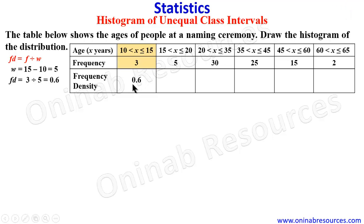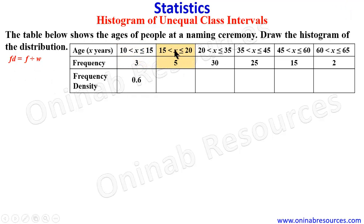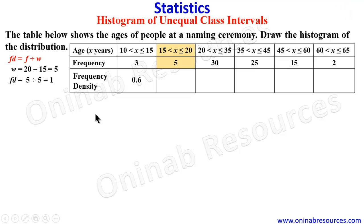Please note: the class intervals given here are connected. If you look at this, 10 to 15, 15 inclusive, then 15 to 20, 20 to 35 — they are connected. That is why to get the class width we go straight from 15 minus 10. For the second class interval, the class width is 20 minus 15, which is 5. The frequency density is 5 divided by 5, which gives 1.